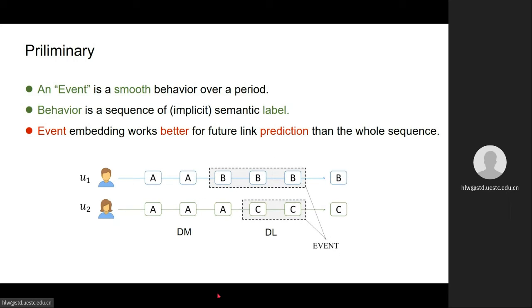For example, let's take user 2 as an example. He used to study on data mining, and then he changed his research direction to deep learning. We believe if we want to predict his future research direction or who he will collaborate with, we believe the event deep learning is more suitable than data mining or data mining combined with deep learning.